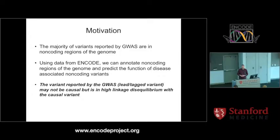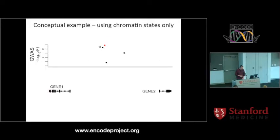Like the previous tool, the first two bullet points are essentially the same: we have a lot of variants that we find in all these GWAS studies. They are mostly in non-coding regions and we have no idea what they do. So we can use data from ENCODE and from the Roadmap Epigenomics Project to get a little bit more insight into what these regions underlying these variants might actually be doing.